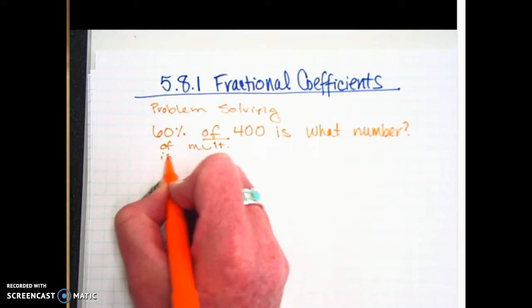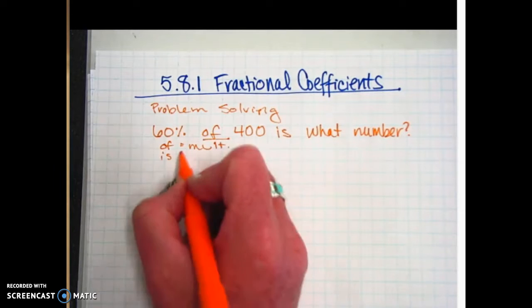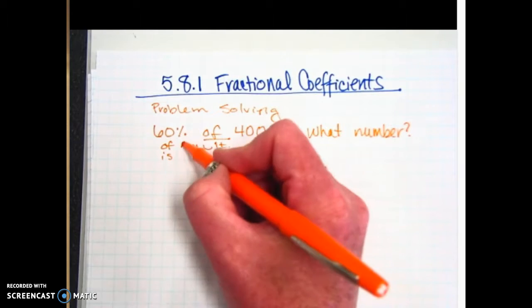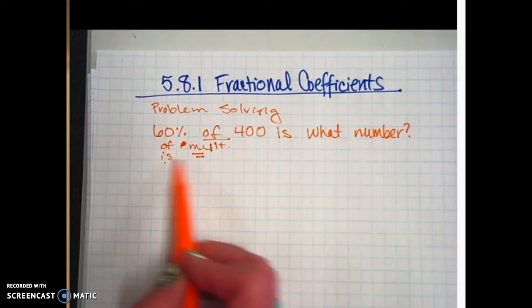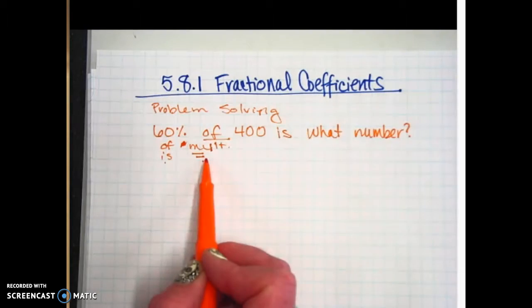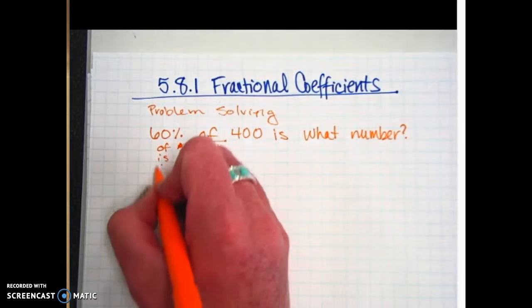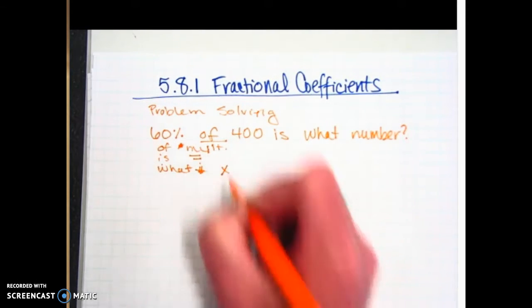And how about 'is'? That's where you should put an equal sign. So if you see the word 'of', that indicates multiplication. If you see the word 'is', write an equal sign. How about when you see 'what number'? X.